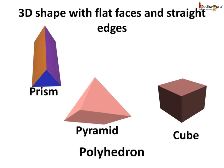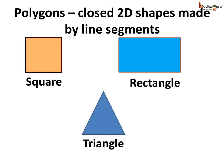A solid shape with flat faces and straight edges is called a polyhedron. So this prism and the pyramid and the cube are polyhedrons, or polyhedra, which is the plural of polyhedron. If you remember, polygons are the 2D shapes which are closed figures made of line segments, like the square, the rectangle, the triangle, etc.